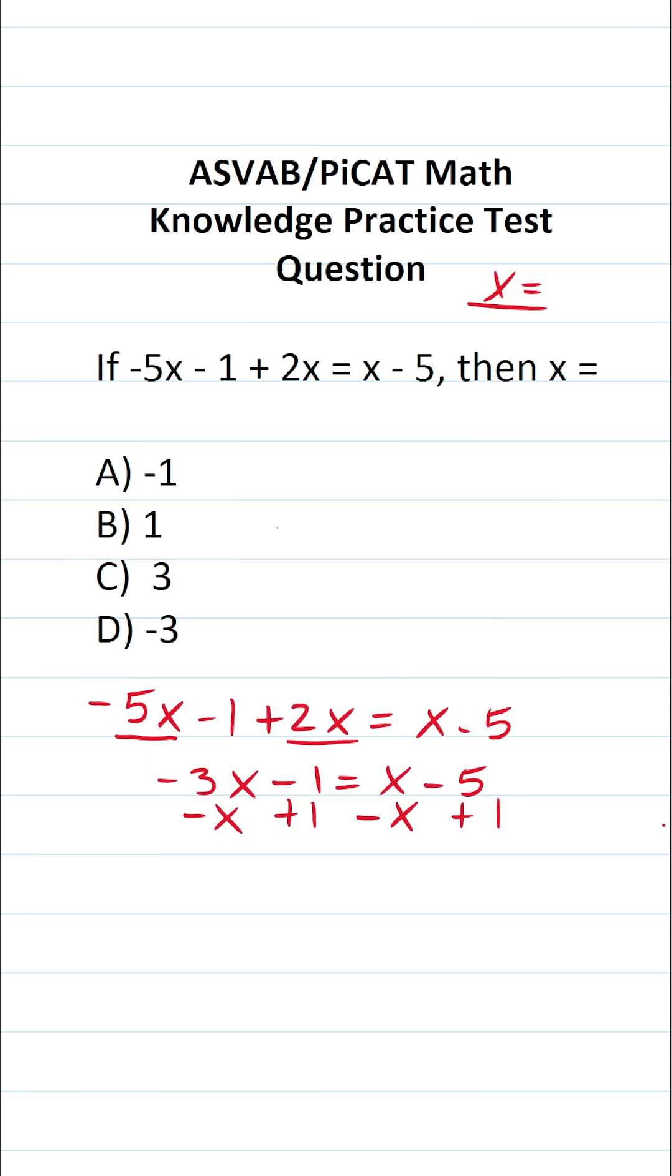All right, so negative 3x minus x is going to be negative 4x. Negative 1 plus 1, that's 0, so those cross out. X minus x is 0, so those cross out. Negative 5 plus 1 is going to be negative 4.